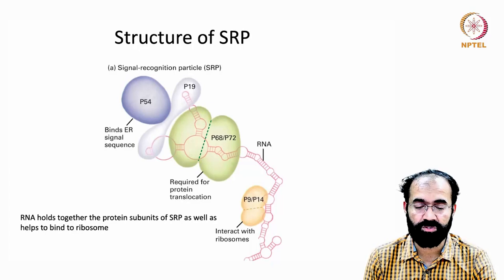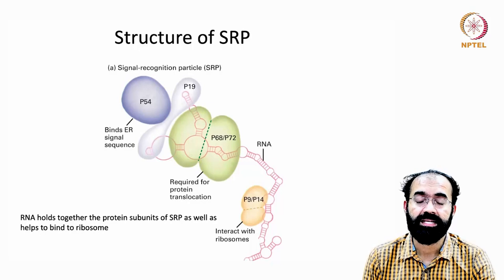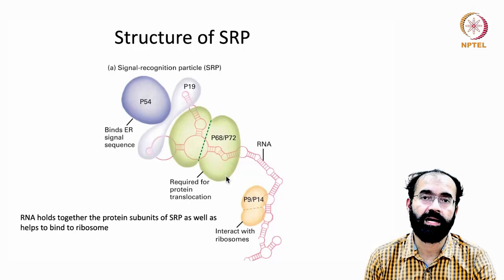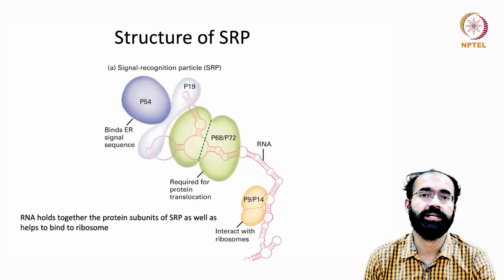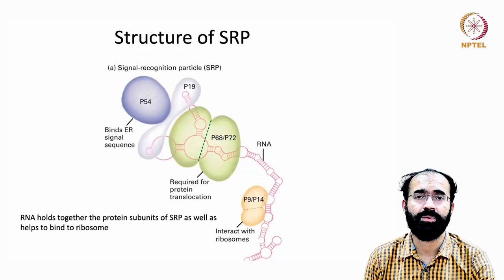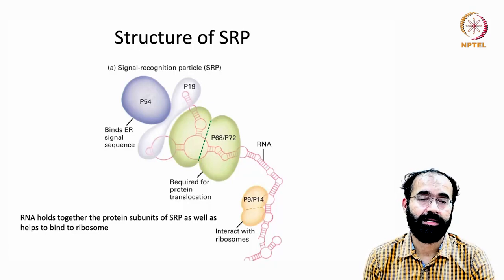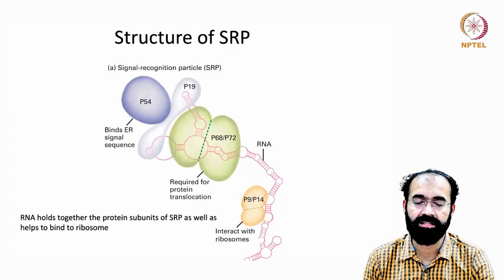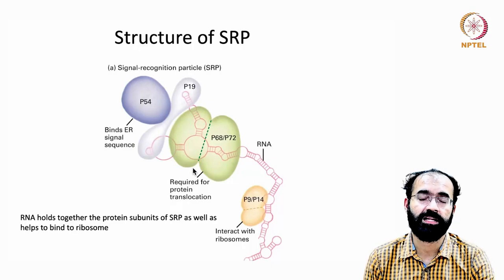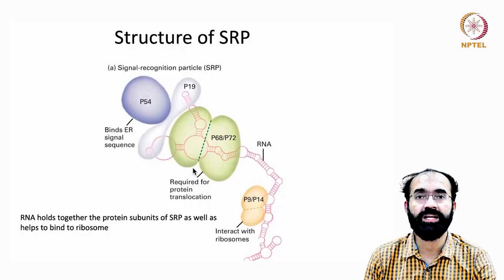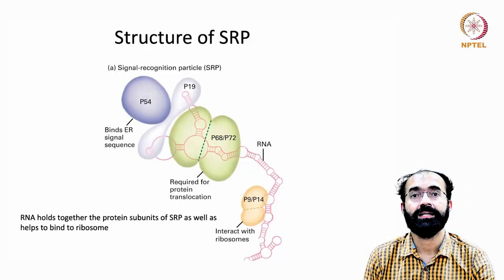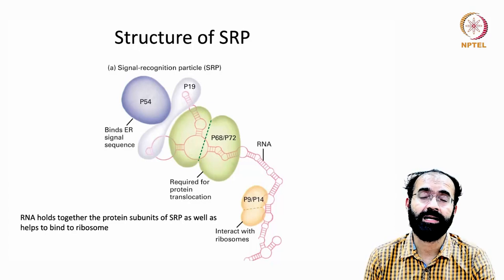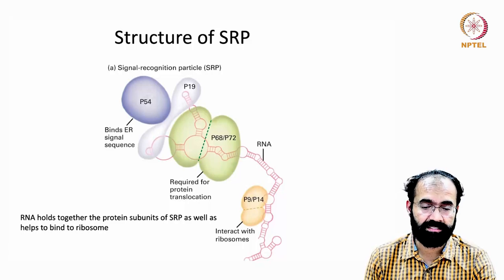The RNA component holds together the protein subunits of SRP and helps it bind to the ribosome. This non-coding RNA is responsible for gluing the proteins together — think of a garland where a thread sews beads together. The RNA acts like that thread and the proteins are like the beads. This illustrates the importance of a non-coding RNA in maintaining both the structure and function of the signal recognition particle.